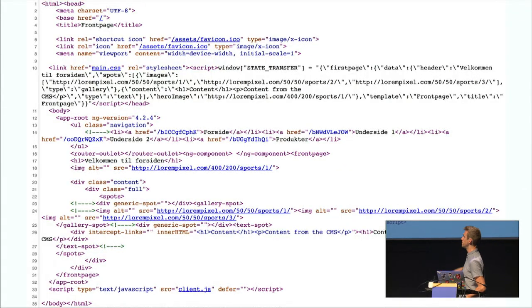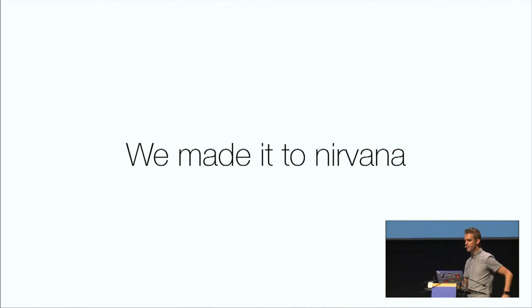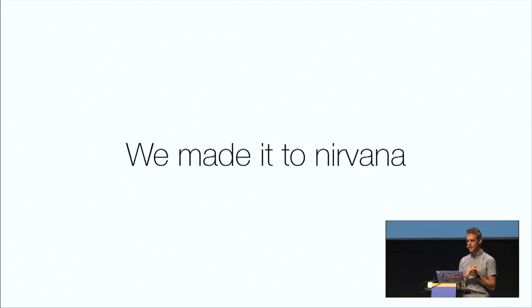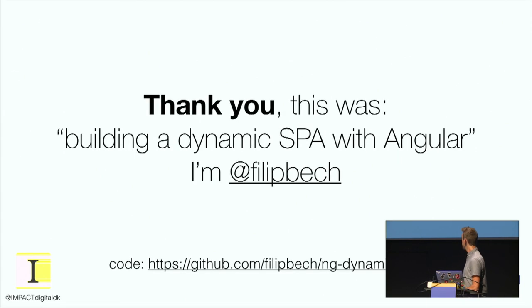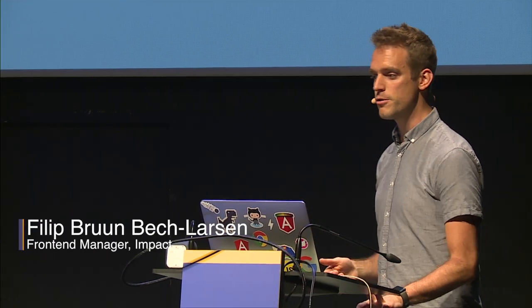Putting it all together and viewing the page source, we actually have our entire website — at the top is the state transfer object holding all the information that would normally come from the server for this route, and then the rendered-out page. This is pretty much all we wanted — we made it to Nirvana. This approach should work for any CMS that can output page information as JSON. That's all for me — this was Building a Dynamic Single Page Application. You should follow me on Twitter; I'll tweet out a link to the slides and there's a GitHub repo with a working version you can clone, npm install, npm run build, and see everything in production. Thank you very much.